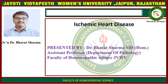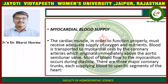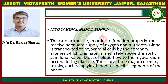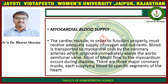Today's topic is Ischemic Heart Disease. Now, myocardial blood supply. First, we understand how the myocardial blood supply happens. The cardiac muscle, in order to function properly, must receive adequate supply of oxygen and nutrients. Blood is transported to myocardial cells by the coronary arteries, which originate immediately above the aortic semilunar valve. Most of the blood flow to the myocardium occurs during diastole.